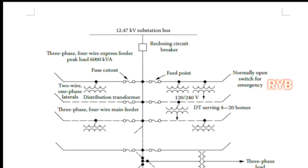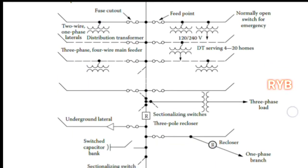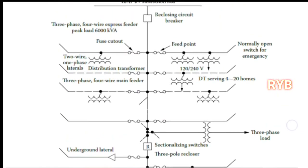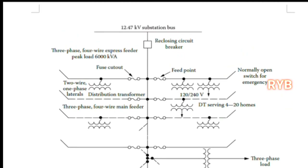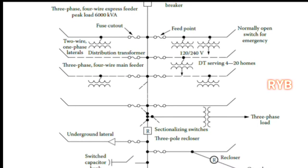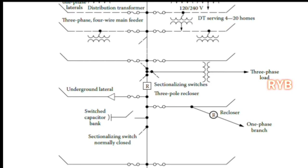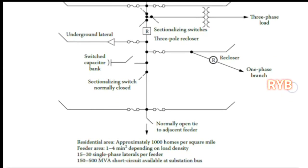In the last video we discussed what is a primary feeder and what are its parts. You can see the link in the description. The main primary feeder has a closing circuit breaker, after which laterals and sub-laterals are allowed. A tie line is a line and a tie switch is the switch used to connect an adjacent feeder, known as a sectionalizing switch.